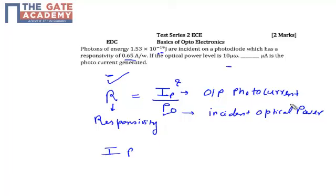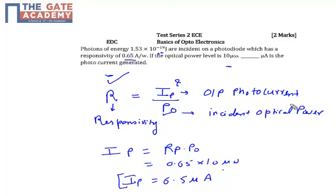So we can calculate IP as R × P0. We can put the values: 0.65 × 10 microwatt, which equals 6.5 microampere. So the photocurrent is 6.5 microampere.